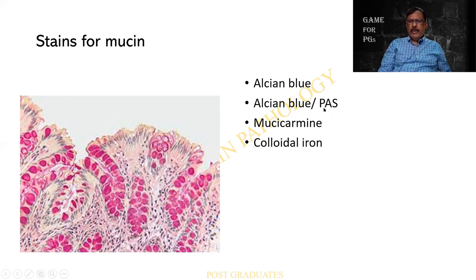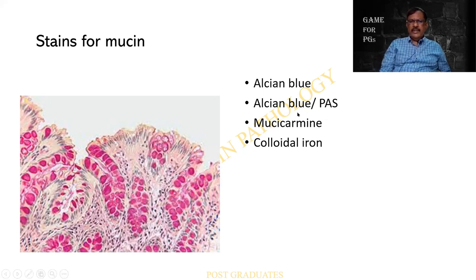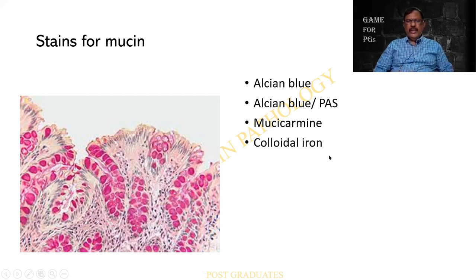Alcian blue can be used in combination with PAS. Mucicarmine is a versatile stain, as I shall be showing you in one of the pictures. Colloidal iron is another option. So these are a battery of stains which could be used for mucin.